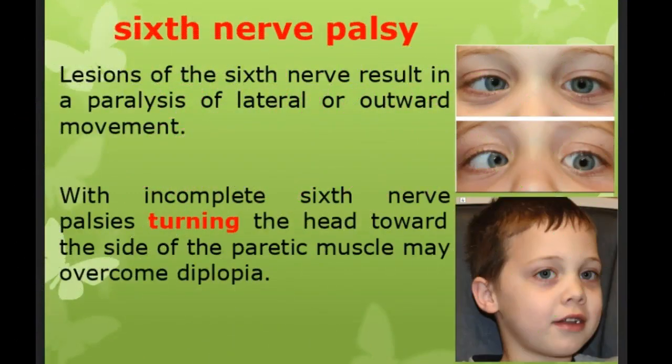Lesion of the sixth nerve results in paralysis of lateral or outward movement. With incomplete sixth nerve palsy, turning the head toward the side of the paretic muscle may overcome diplopia.